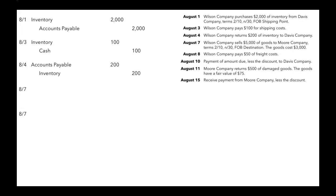August 7th, Wilson Company becomes the seller. Wilson Company sells $5,000 of goods to Moore Company, terms 2/10 net 30, FOB destination. The goods cost $3,000. Whenever you're the seller and make a sale, you need two different entries: first, record the sale itself — the amount charged to your customer; second, record what those goods cost you.